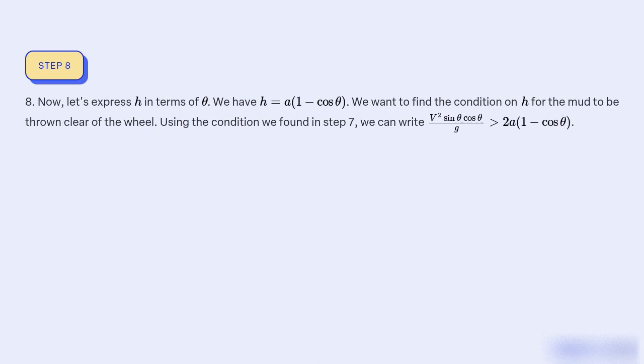8. Now, let's express h in terms of θ. We have h equal to a(1 minus cos θ). We want to find the condition on h for the mud to be thrown clear of the wheel. Using the condition we found in step 7, we can write V² sin θ cos θ divided by g = 2a(1 minus cos θ).